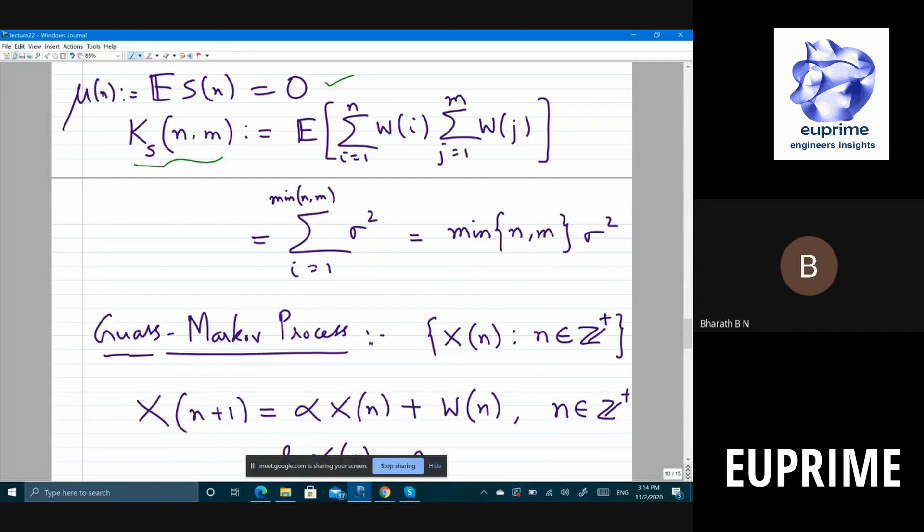For example, if you choose n and m as 100 and 105, the covariance will be 100 times σ². Whereas if you take 1000 and 1005, it will be 1000σ². So the covariance depends on where you sample.